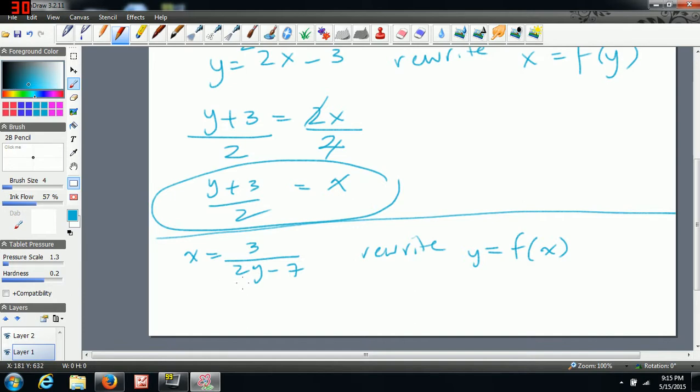So what you want to do first to solve for y is bring this up. So to do that, you're going to multiply both sides of the equation by 2y minus 7. And when you do that, the one on this side will cancel, so you'll just be left with 3, and you'll end up with it on this left side.